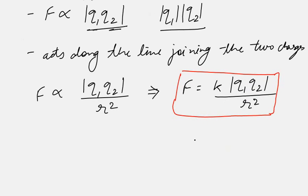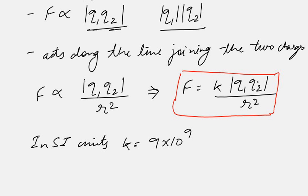Here k is a proportionality constant whose value in SI units is 9 × 10⁹. From this equation you can easily find the SI units for k: taking all quantities other than k to one side, the units for k are newton meter squared coulomb minus two, where coulomb is the unit for electric charge.